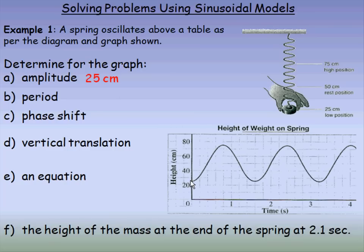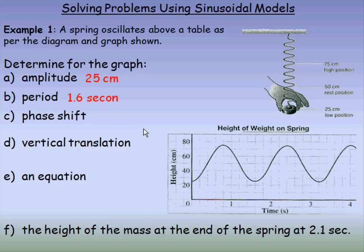The period is the length of one full cycle. If we start at a trough here and cycle to the next trough, that is one full cycle. Notice each second is broken into five blocks, so each block is 0.2 seconds. Counting across, the period works out to 1.6 seconds. So the length of the period is 1.6 seconds.